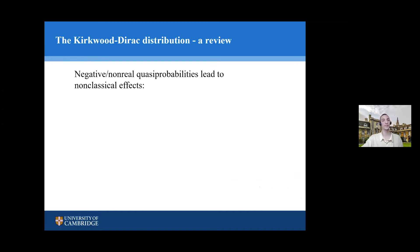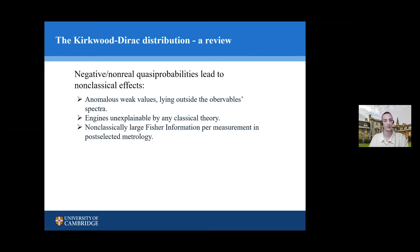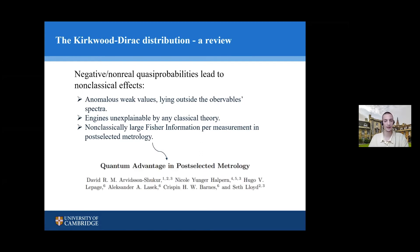If the KD distribution only contains non-negative numbers, then it's just a standard probability distribution, and you'd expect nothing quantum is really happening — you've modeled the whole experiment by a standard probability distribution, and operationally you'd expect no quantum advantages or signatures of quantum effects in measurement. But when you have negative or non-real quasi-probabilities, you can get various non-classical effects. Here are a few examples — each is interesting in its own right, and this last one was written by a few people in this group at the Cavendish, including David.